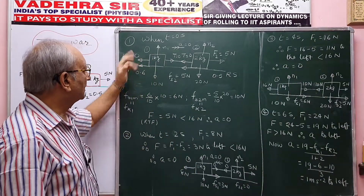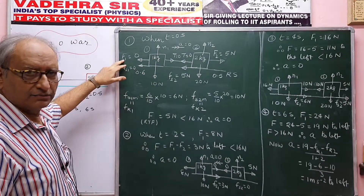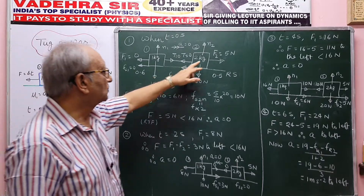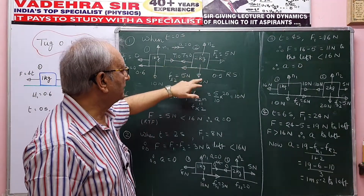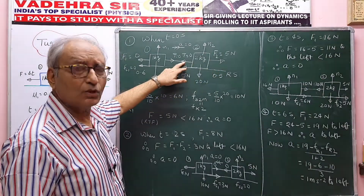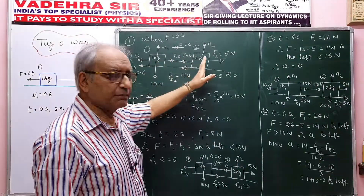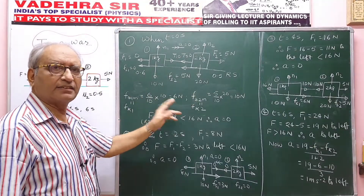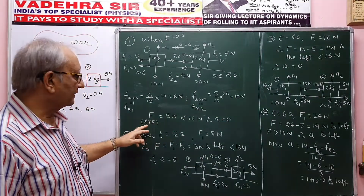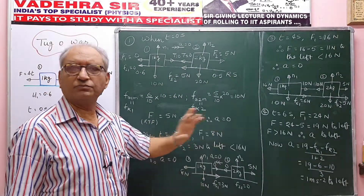When T is 0, then the force on block 1 is 0, and the only attracting force is 5 Newton to the right. Looking at the free body diagram for the 1 kg block: the applied force is 0, the tension pulls, and for 2 kg block, F2 is 5 Newton to the right with tension pulling to the left. The resultant attracting force is 5 − 0 = 5 Newton, which is less than 16 Newton, so acceleration is 0 and the system does not move.